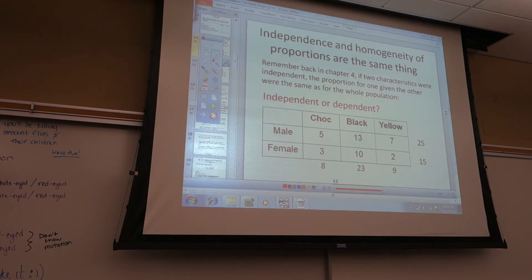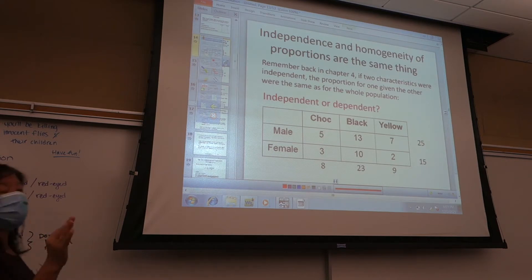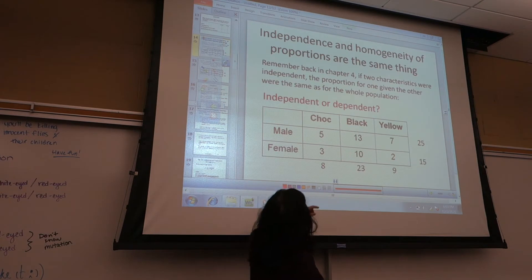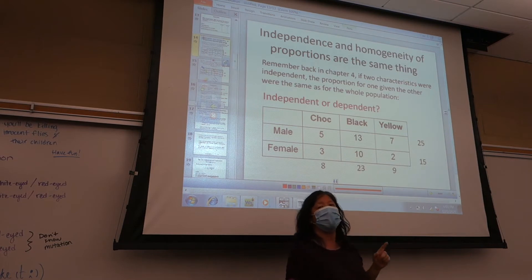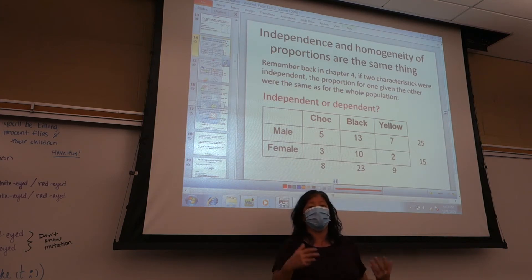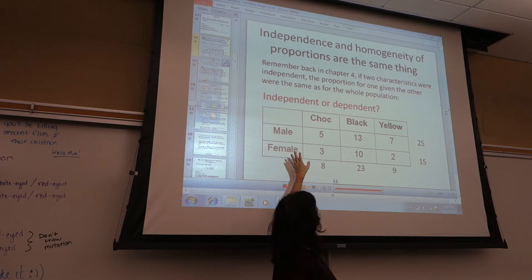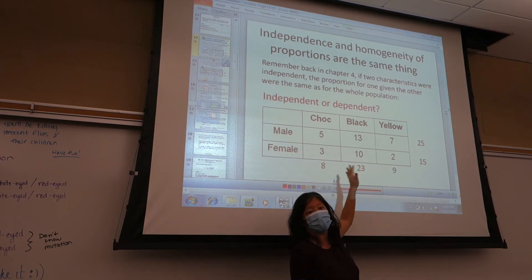This is one that you've seen before, the contingency table. So please note, tests for independence and tests for homogeneity of proportions are the same thing. Because how do I know if two variables are independent? It's when their proportions are homogenous, the same. Homogenous is the same. So homogeneity of proportions means when the proportions are the same. So having the same proportions means you're independent. They're the same test.